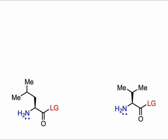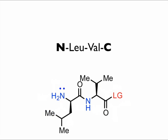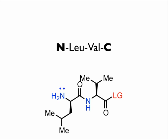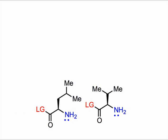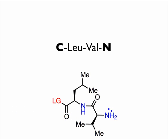If we were to simply couple the two amino acids now, we would end up with two products: one in which leucine is the N-terminus, where leucine acted as the electrophile, and one in which valine is the N-terminus, which comes from valine acting as the electrophile. Since we only desire one of these sequences, we've already lost half of our material to an undesired sequence, and the problem gets worse as more amino acids are added.